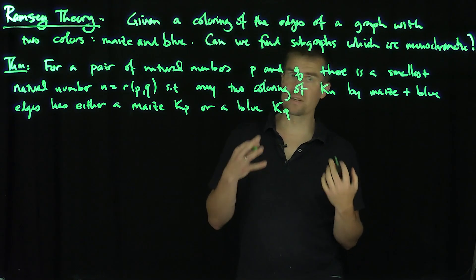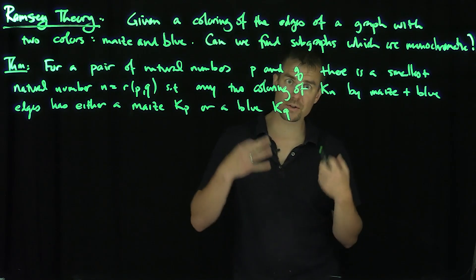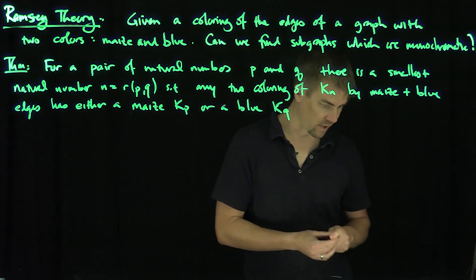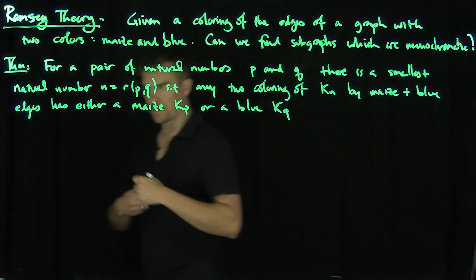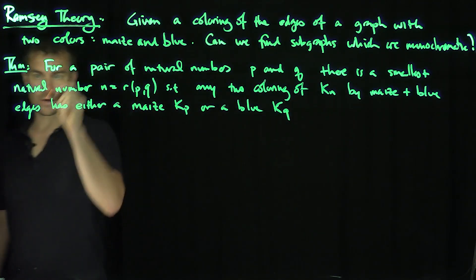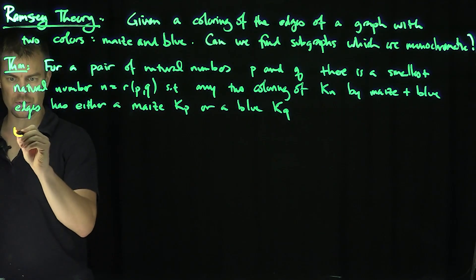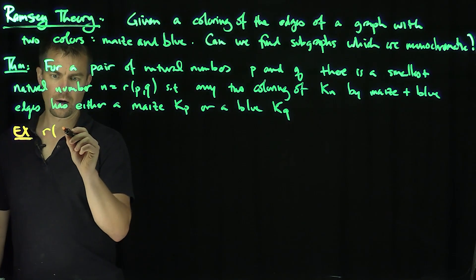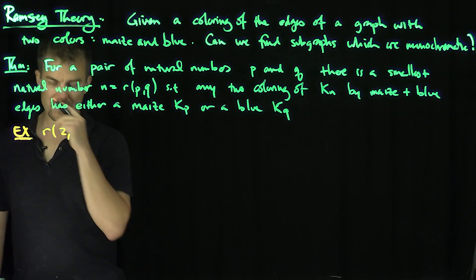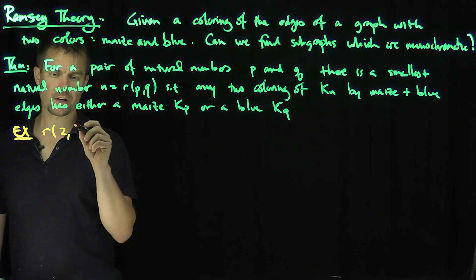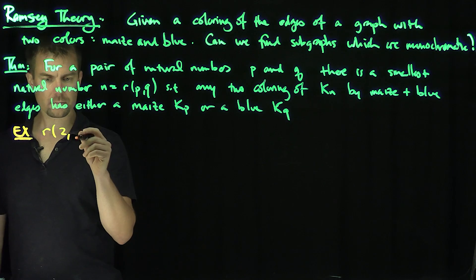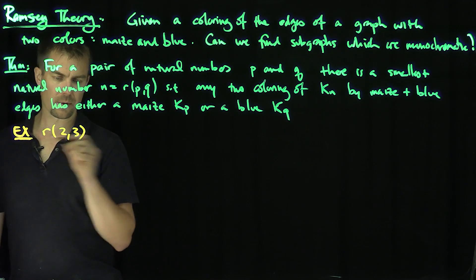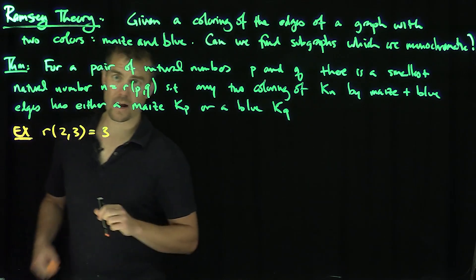Of course, it's not even clear that this number exists. But let's do some examples to figure out what this number actually is. Let's look at R of 2 and 3, for example. I claim that this is equal to 3.